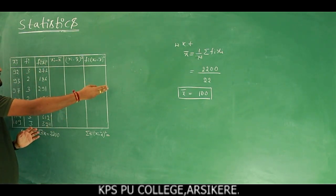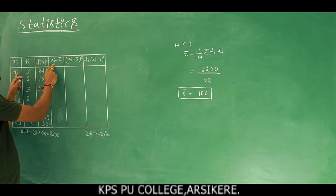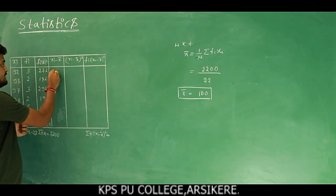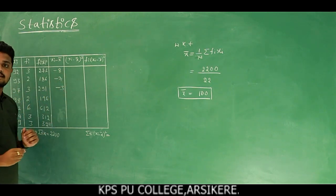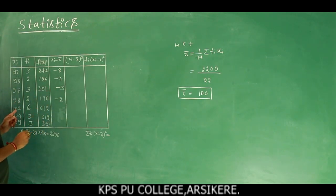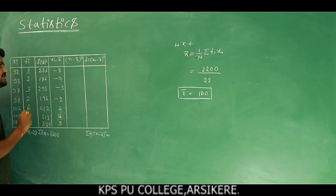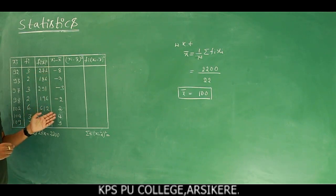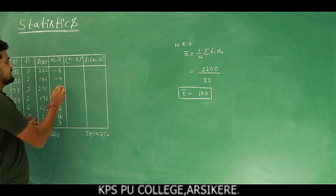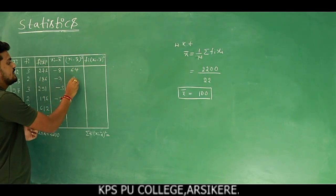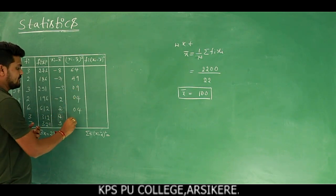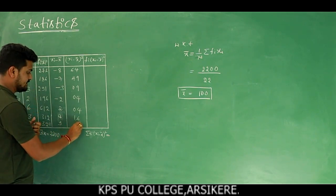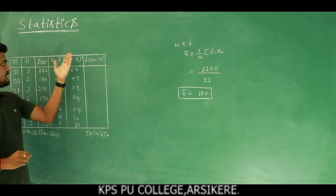Now we find xi minus x̄, with x̄ = 100: 92−100=−8, 93−100=−7, 97−100=−3, 98−100=−2, 102−100=2, 104−100=4, 109−100=9. Then we square these values to get (xi − x̄)²: 64, 49, 9, 4, 4, 16, 81.